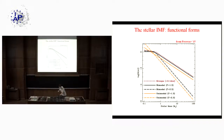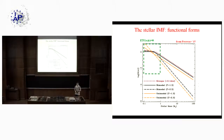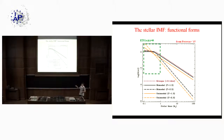Increasing the slope increases the fraction of low-mass with respect to high-mass stars — a more bottom-heavy distribution. For early-type galaxies at redshift zero, all the light we observe comes from stars below about one solar mass. When I talk about constraints on the IMF of low-redshift early-type galaxies, I am talking about this segment of the IMF — the more massive stars are already gone for an old population.